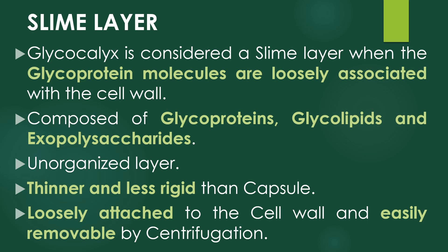The glycocalyx is considered a slime layer when glycoprotein molecules are loosely associated with the cell wall. The basic composition of the slime layer includes exopolysaccharides, glycoproteins, and glycolipids — these three are the major components. The slime layer is an unorganized layer, in contrast to the capsule which is organized. The slime layer is thinner and less rigid than the capsule, and it is loosely attached to the cell wall, so it can be easily removed by centrifugation.